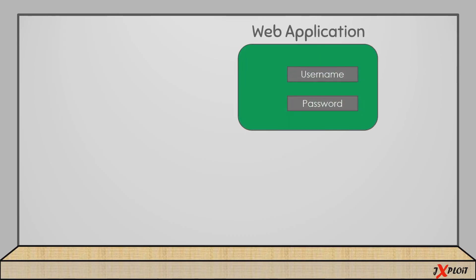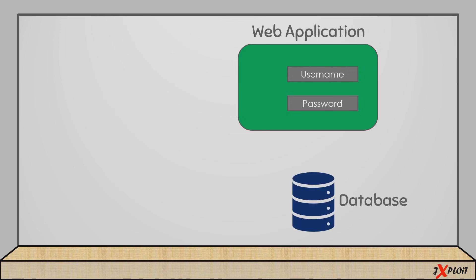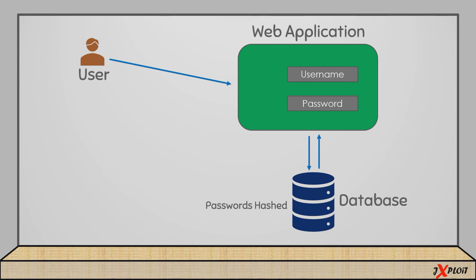Now, another use of hash functions is in web applications. Most web applications have a database where all usernames and passwords are saved. The passwords in the database are stored as hash values. When a user inputs their username and password, the hash value of the password is generated and a query is sent to the database to check whether that combination exists. If it does, the user gets access.